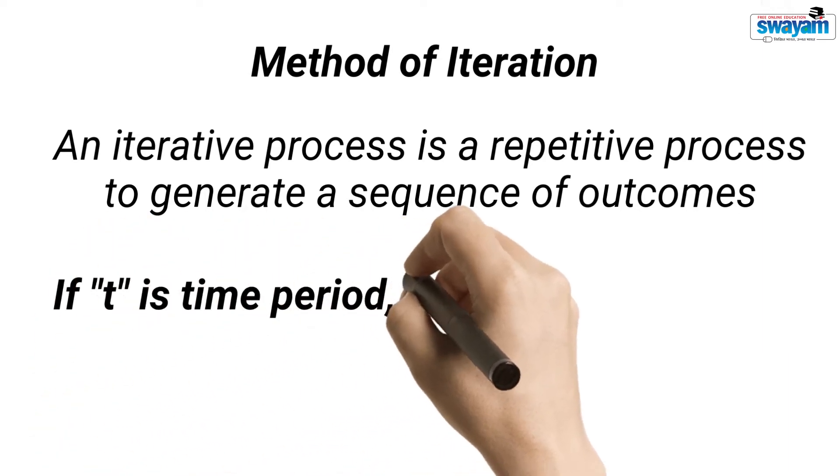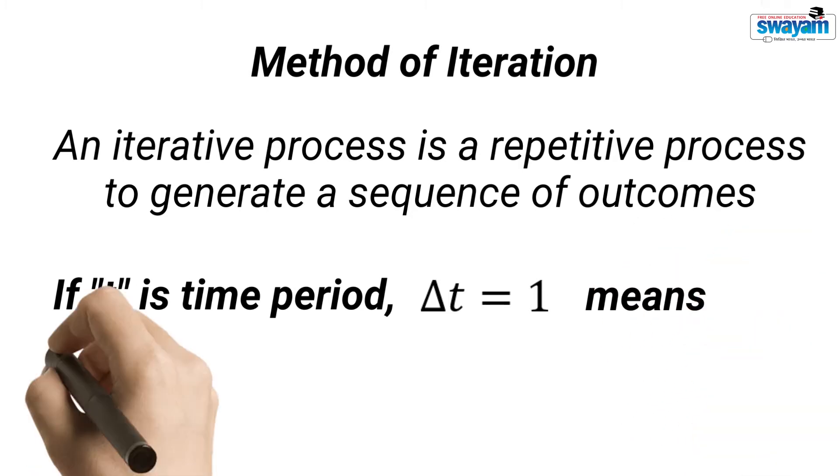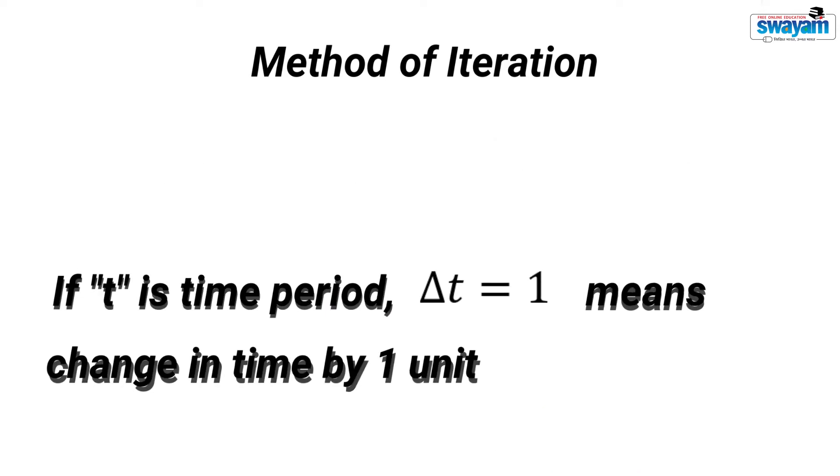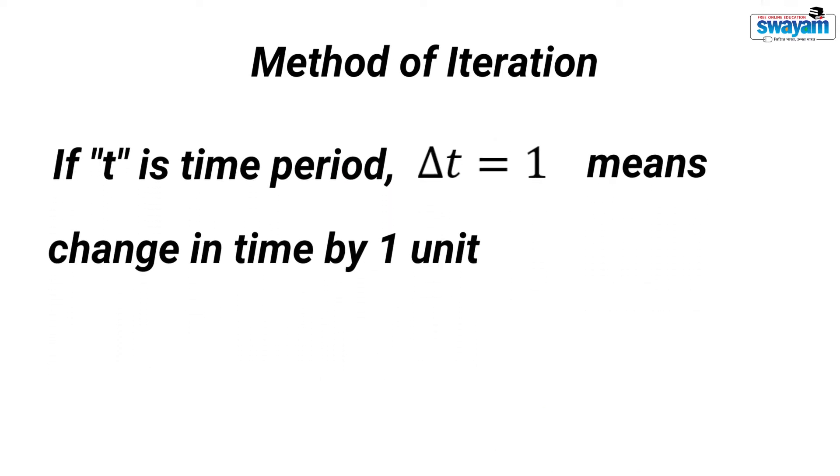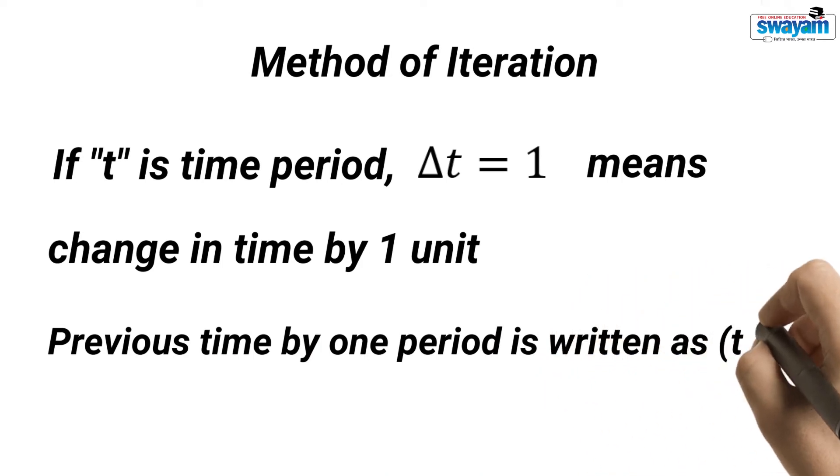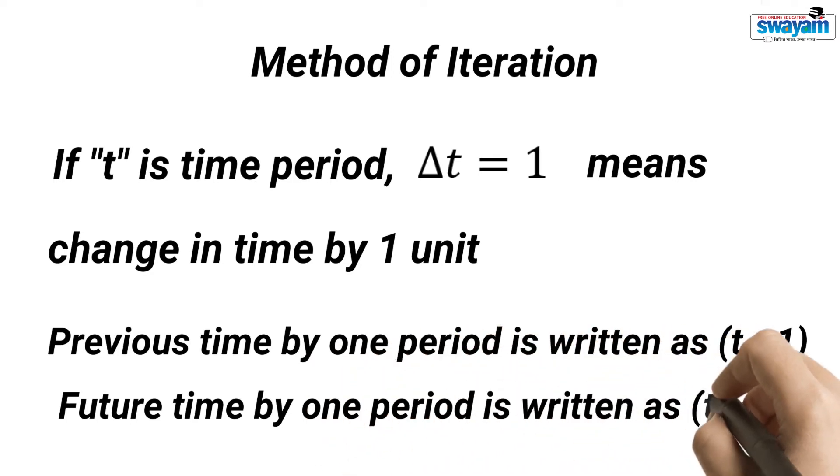Consider this example. If t is the time period, delta t equal to 1 means a change in time by one unit. If the current time is represented by t, the previous time by one period will be represented by t minus 1, and the future time by one period will be represented by t plus 1, and so on.